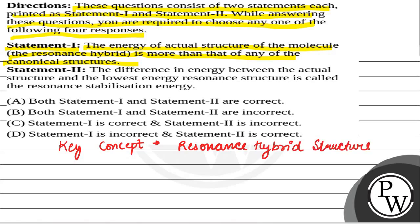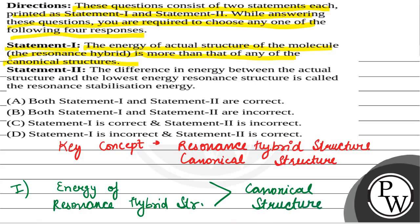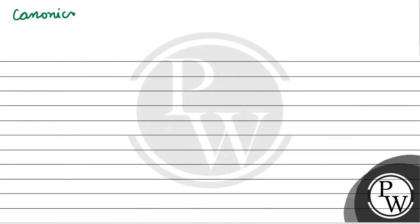If I talk about the first statement: the energy of the resonance hybrid structure is more than that of any canonical structure. So what we are saying is the energy of the resonance hybrid structure is more than the canonical structure of a molecule.